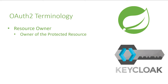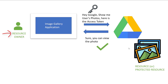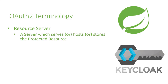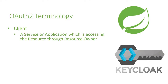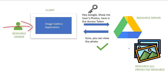The next term is resource owner — as the name suggests, this means the owner of the resource, in this case the person who owns the photos. The next term is resource server, which is the server that stores or hosts the resource — in our case, it's the Google Drive server. The next term is client, which is the service or application accessing the resource — in our case, the image gallery application. A client can be a web, mobile, desktop application, or a standalone service like a microservice or even a device like a smart TV.